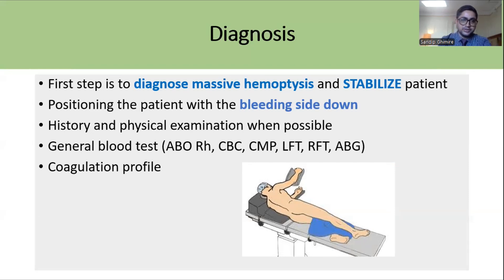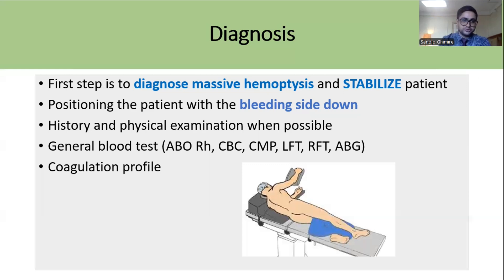If the site of bleeding is known, the patient should be positioned with the bleeding side facing down to prevent aspiration into the normal lungs. Once stabilized, a detailed history and examination should be taken to identify the underlying cause. General blood tests should be performed including ABO grouping, cross-matching, CBC, CMP, LFT, RFT, ABG, and coagulation profile to rule out any possible bleeding diathesis.